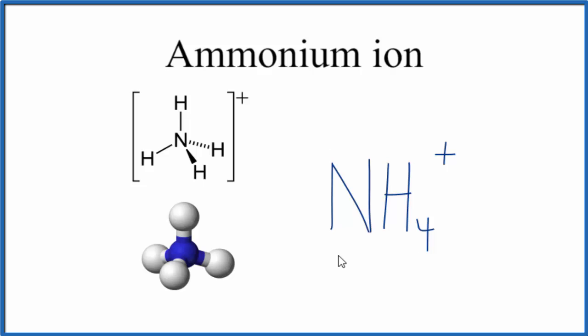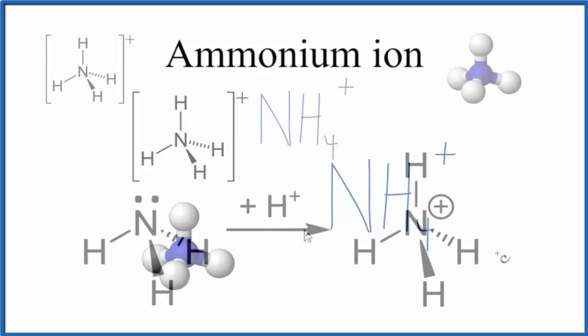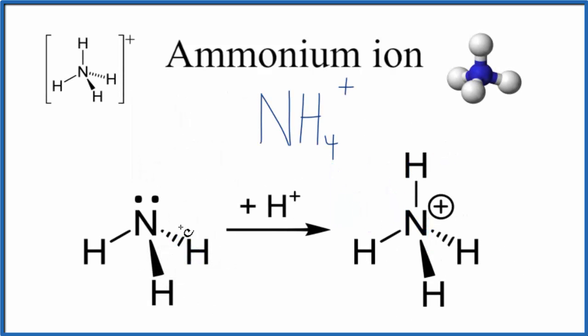Let's talk about how we got this ammonium ion in the first place. To get the ammonium ion, we take ammonia, NH3, with its lone pair and trigonal pyramidal molecular geometry, and we add a hydrogen ion, H+.